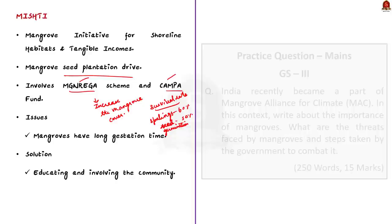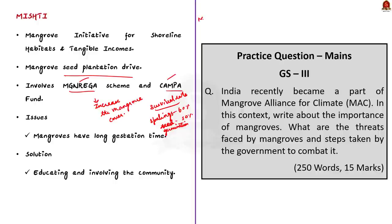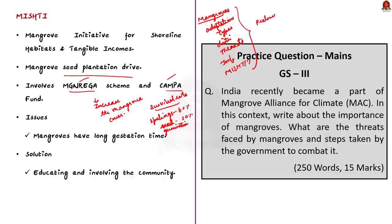In this discussion we saw about mangroves, their adaptations, types, distribution in India, threats, importance, and facts about the MISTHI program. This topic is very important for both preliminary and mains examinations. UPSC may ask questions about the importance of mangroves and threats they face. Let's move on to the next news article discussion.